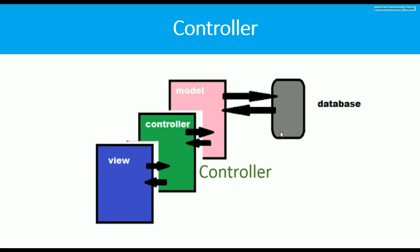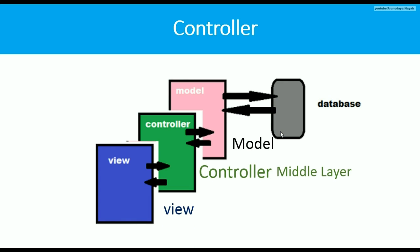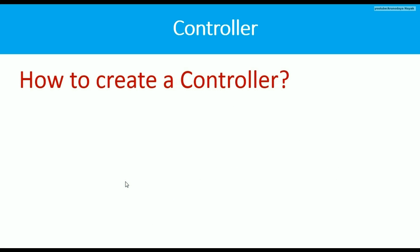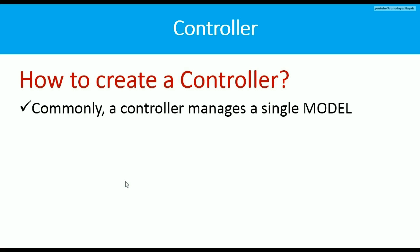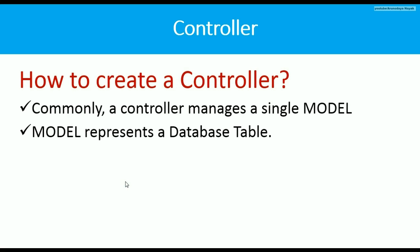The view is the front layer of your application. The most important point here is that the database is only accessible by the model. Only the controller controls your application's request and response, and the view is basically the HTML that will be displayed in your browser.